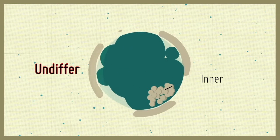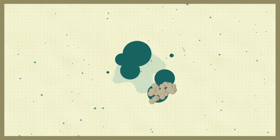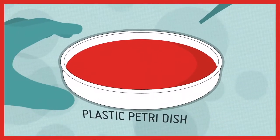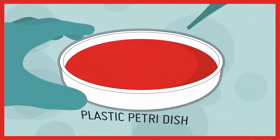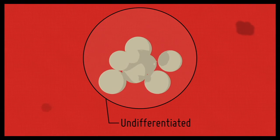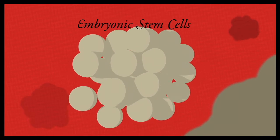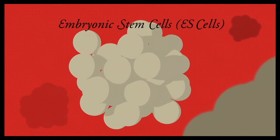If the cells of the inner cell mass are isolated, they can grow indefinitely in a plastic dish and maintain this undifferentiated state. These cells are known as embryonic stem cells, or ES cells.